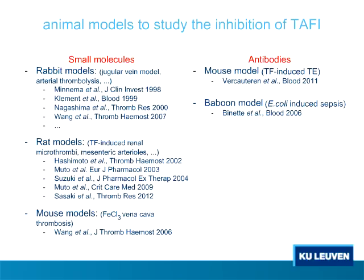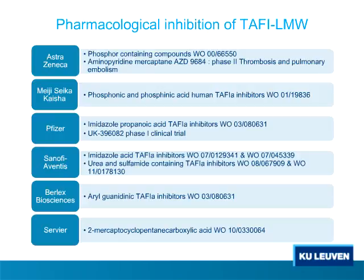These are all in vitro methods to study TAFI inhibition. There are also animal models to study TAFI knockouts and small molecules that inhibit TAFI-A directly: rabbit, rat, and mouse models have been used. For testing antibodies, a baboon model and a mouse model have been used. A number of companies have been interested in developing TAFI or TAFI-A inhibitors; however, until now none of these inhibitors have made it into the clinic.